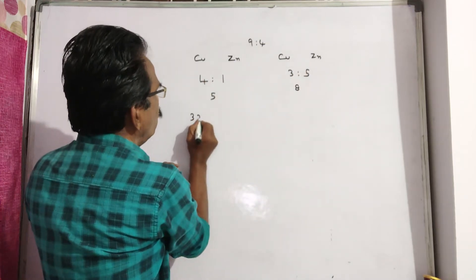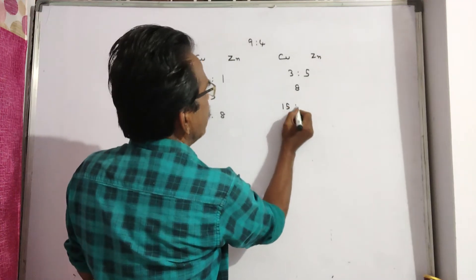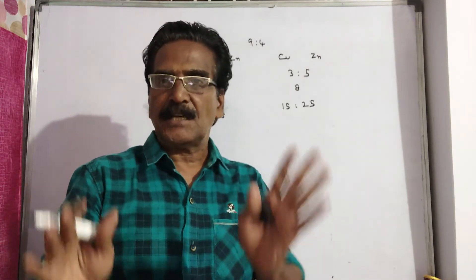8 times 4 is 32. 8 times 1 is 8. 5 times 3 is 15. 5 times 5 is 25. So, this is 40. This is 40. Now, the quantities are made equal.